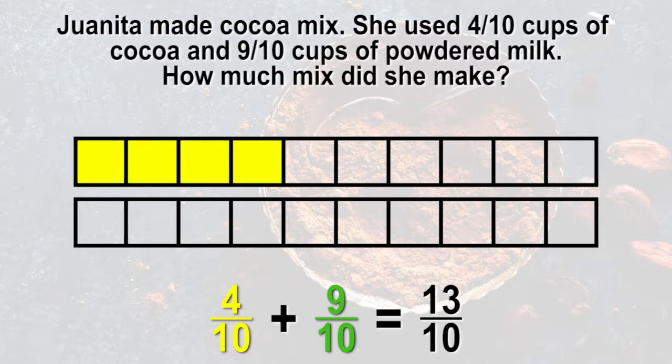Next, she added 9 tenths cup of powdered milk. Let's continue to fill in the rectangles to add 9 tenths of a cup more. We can see in the model that 4 tenths plus 9 tenths is 13 tenths or 1 whole and 3 tenths of mix.